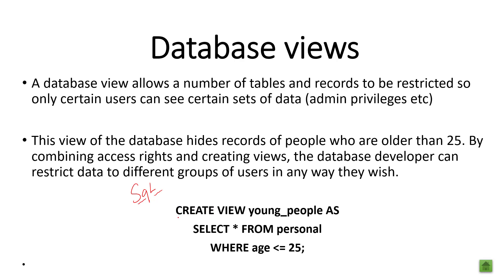Using SQL, we can create a view — for example, a view called 'young people'. We write: CREATE VIEW young_people AS SELECT all FROM personal WHERE age is less than or equal to 25. That hides records of people who are older than 25, so we can see all the young people in our database and it removes all those older than 25.